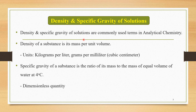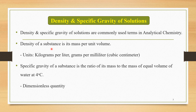The density and specific gravity of solutions are commonly used terms in analytical chemistry. The first term is density of a substance. Density of a substance is its mass per unit volume, and it can be calculated with the relation: mass equals density times volume.